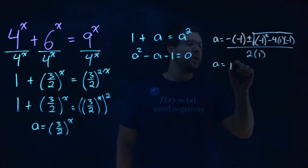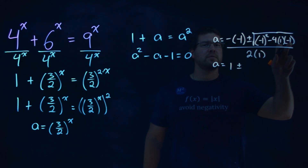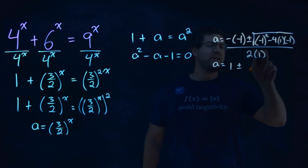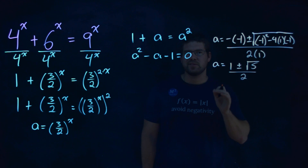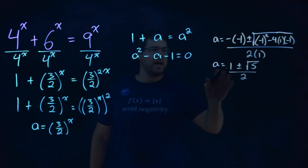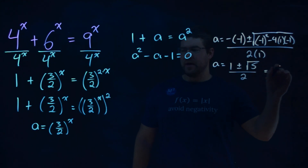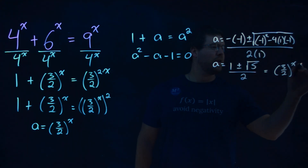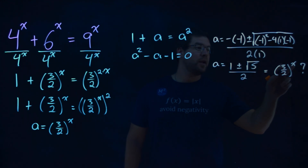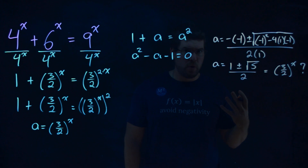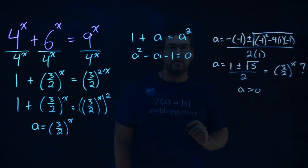This simplifies: negative negative is positive, so positive 1, plus or minus — negative 1 squared is positive 1, and minus 4 times negative 1 makes a positive, so inside the square root we get positive 5 — all over 2. And that's where it looks golden! Now, a equals (3/2)^x, but can (3/2)^x ever be negative? No. So a must be greater than 0.